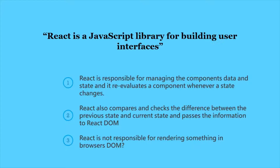Whenever props, state, or context changes, components that use these concepts are updated by React. React checks whether the component is rendering something new. If that's the case, React will let React DOM know about these changes so that React DOM will be able to bring these changes onto the screen. Now let's take a closer look at components and real DOM communication, and try to understand how this actually works.